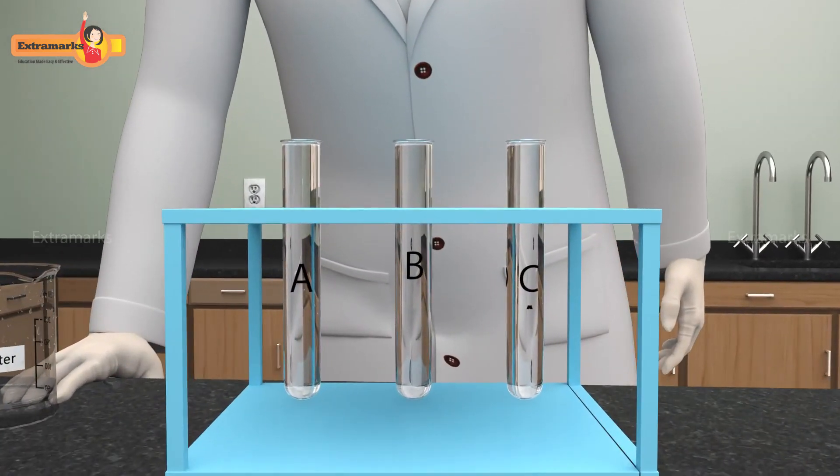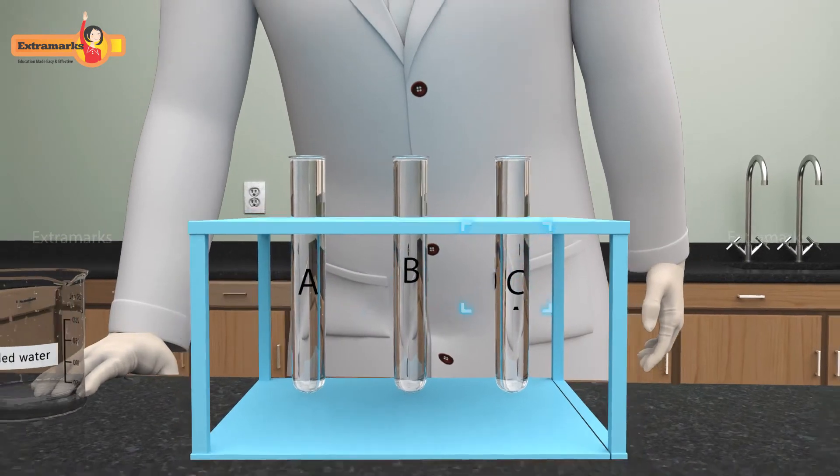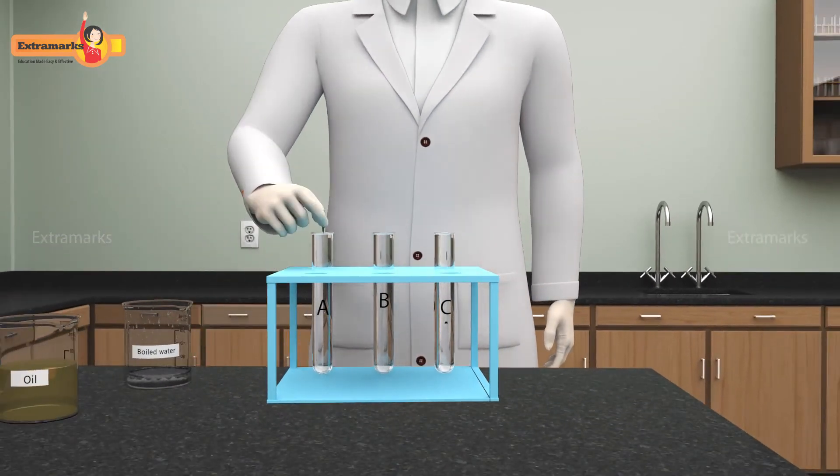Place three test tubes in a test tube stand and label them as A, B, and C. Put one iron nail in each of them.